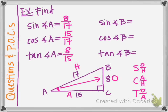Now we find the three ratios from angle B's perspective, so we relabel O, A, and H. The 15 is now the opposite side, the 8 is the adjacent leg, and the 17 is still the hypotenuse. For the sine of angle B, opposite over hypotenuse gives us 15 over 17. The cosine of angle B is adjacent over hypotenuse, or 8 over 17. The tangent is opposite over adjacent, or 15 over 8.